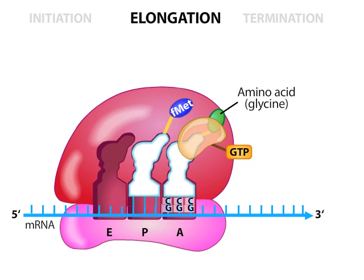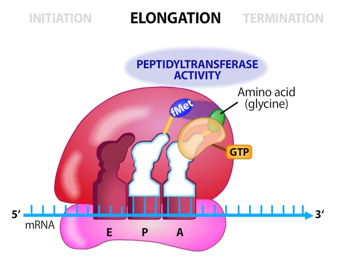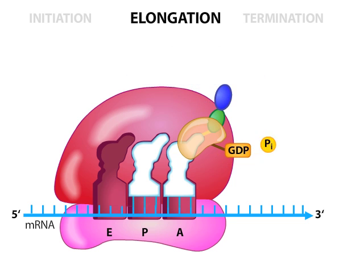In the second step, the ribosome's peptidotransferase activity catalyzes the formation of a peptide bond between the new amino acid in the A site and the previous amino acid in the P site. Simultaneously, GTP is hydrolyzed and the resulting EFTU-GDP is expelled.